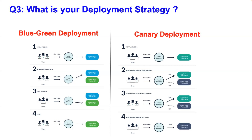Once version 35 is deployed, you shift your load balancer to application 35 so no traffic goes to application 34. You provide a grace period for users still on version 34, and once that grace period is over and you are confident about testing, you simply delete application 34. That is the blue-green deployment process.